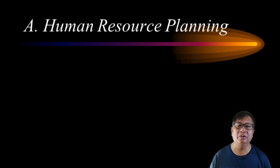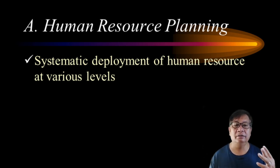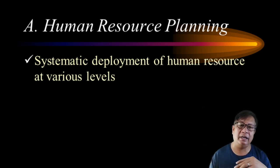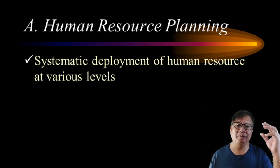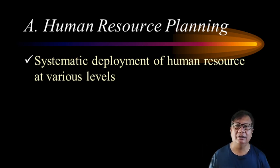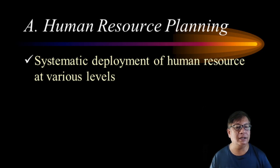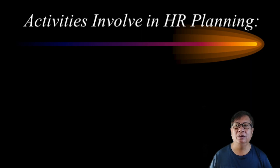Let's begin with human resource planning. According to its definition, this is a systematic deployment of human resources at various levels: top management, middle management, and lower management. At the top, decision making is very critical and at a higher level; middle management has intermediate decision making; and the lower level handles front-line operations.